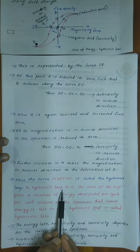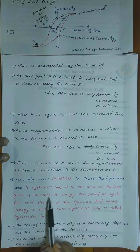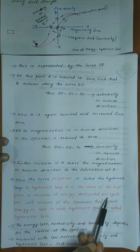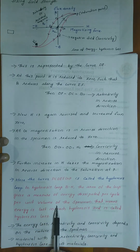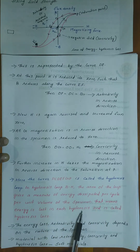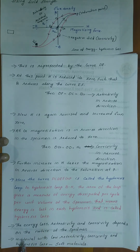In the BH hysteresis loop, the area of the loop gives a measure of energy dissipated per cycle per unit volume of the specimen. This means energy is lost in each cycle, which is called hysteresis loss. The energy loss, retentivity, and coercivity depend on the nature of the specimen.